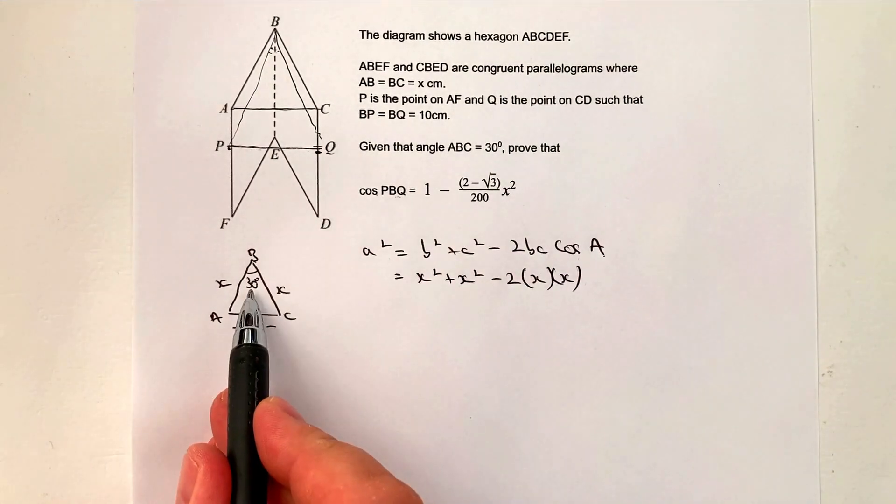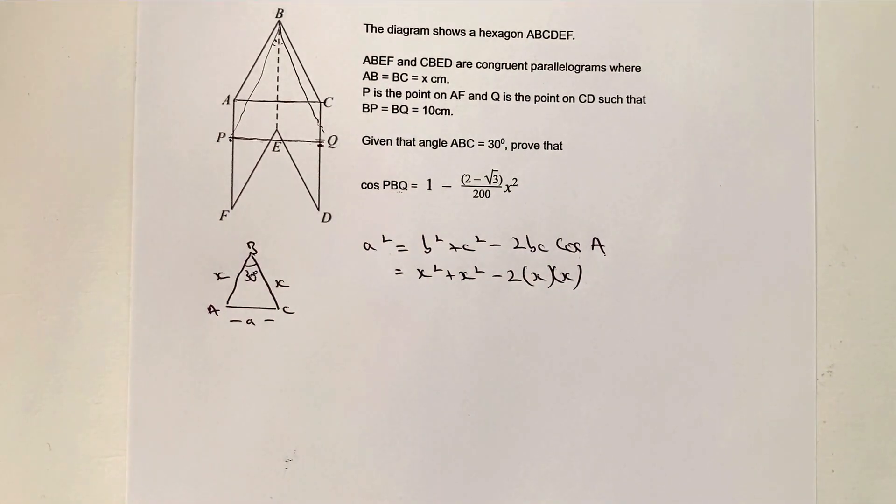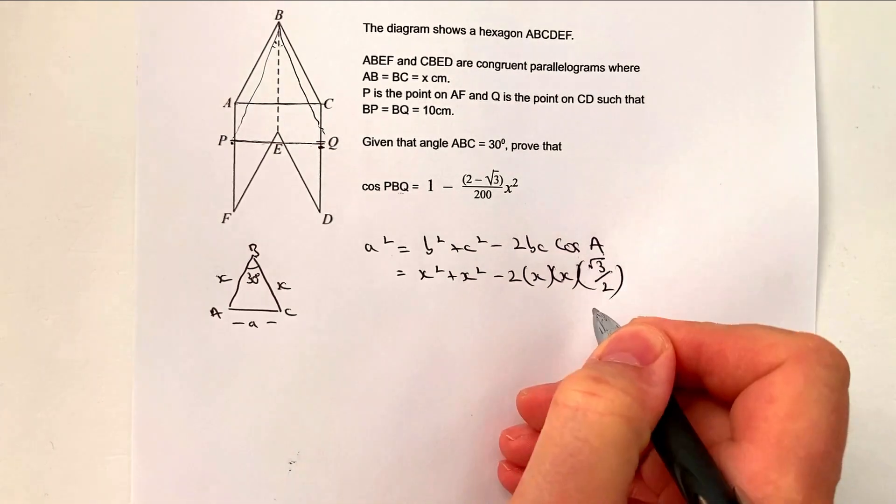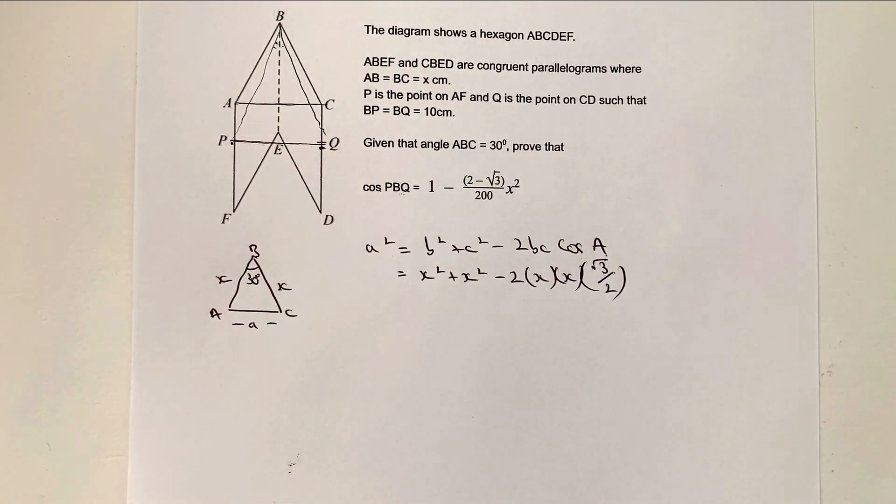Now, the cosine of A is the cosine of 30 degrees, which is actually root three over two. So it's just something that you need to remember, I'm afraid. There are various methods and ways of remembering cosines, and I have covered those in previous videos. So please do have a look.